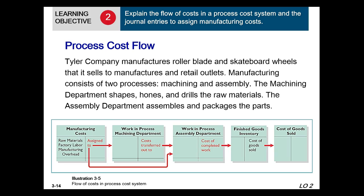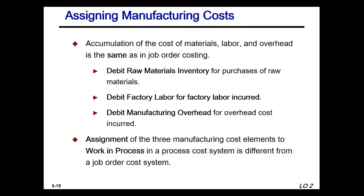The work in process that starts in machining gets transferred to the work in process of the assembly department. In addition, new manufacturing costs can be assigned to just the assembly department. Once the assembly department completes the products, they are assigned to finished goods. When those goods are sold, they go out of finished goods and are debited to cost of goods sold. The accumulation of material, labor, and overhead costs is the same as in job order costing, but the assignment of manufacturing elements is different.